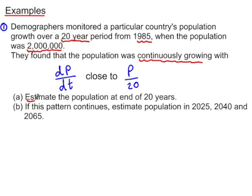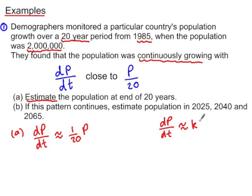So if we're going to estimate the population, we need a function which expresses p in terms of t. At the moment, we've got dp/dt, so we can write that as dp/dt is approximately equal to a scalar multiple of p, 1 over 20p. So from that previous result, we actually have dp/dt approximately equal to kp, where k is 1 over 20.